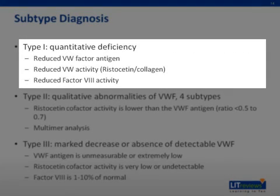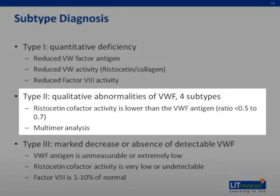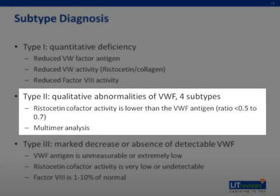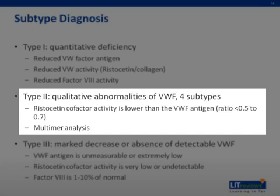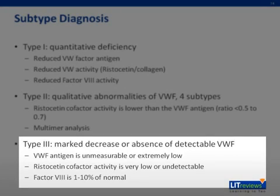Subtype diagnosis for Type I can be made where reduced von Willebrand factor antigen is present, as well as reduced von Willebrand factor activity on either the ristocetin or collagen cofactor assays, and also a reduced factor VIII activity. Type II diagnosis can be made looking at the ristocetin cofactor activity to von Willebrand factor antigen ratio, with ratios being less than 0.5 to 0.7. There are four subtypes of Type II, which can be delineated through various binding activity and multimer analysis. Type III is diagnosed where von Willebrand factor antigen is unmeasurable or extremely low, ristocetin cofactor activity is also very low, and factor VIII is low at 1 to 10% of normal.